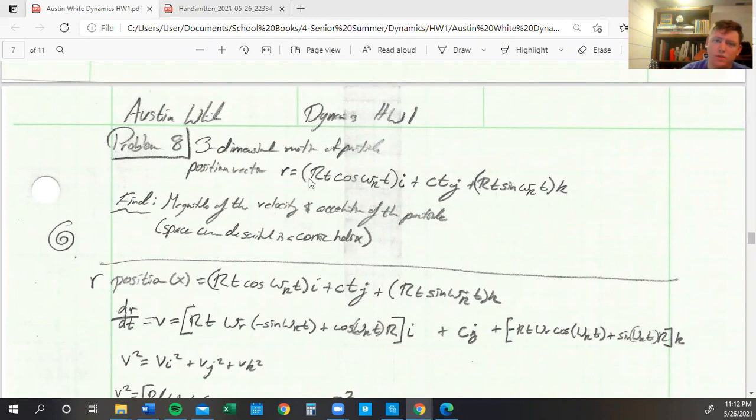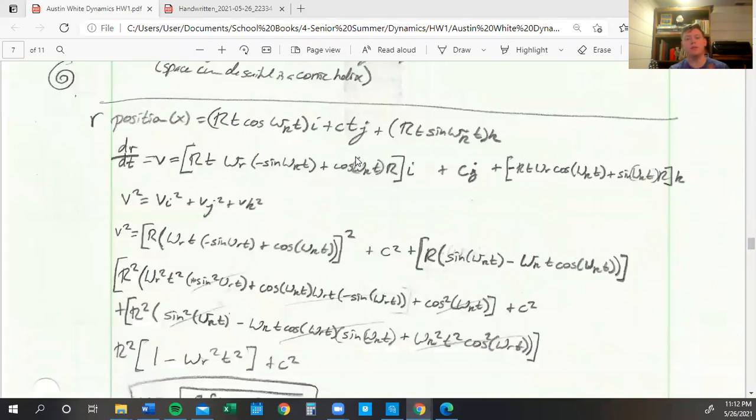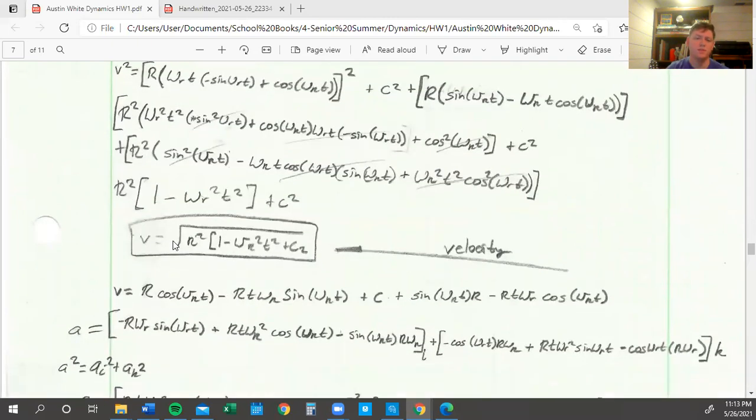With problem eight, we've got r equals, and we need the magnitudes of velocity and acceleration. We figure out that the r position equals this equation, so we just have to differentiate it, which isn't terrible. We do some chain rules, some product rule, and it's just a long equation. Then we square root it to get this nice velocity equation right here.